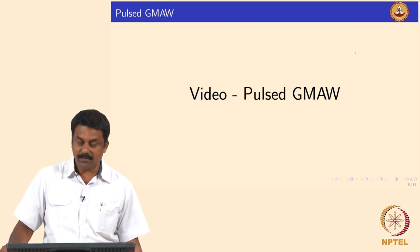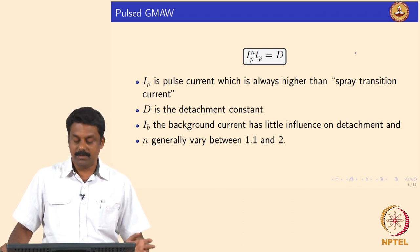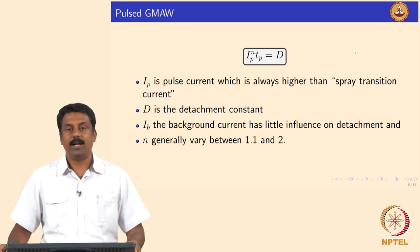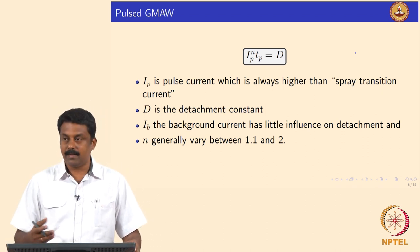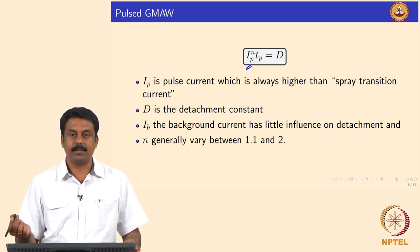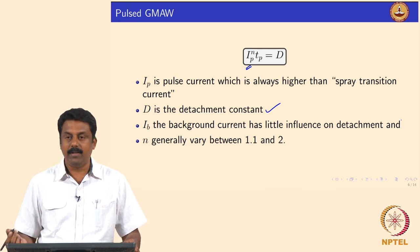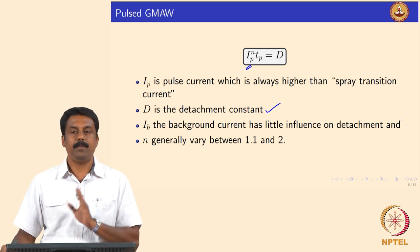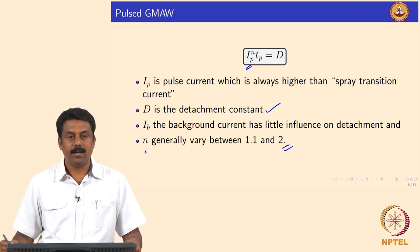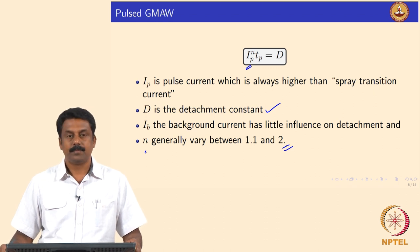Generally for a given material, IP^N × TP is a constant — a function of material composition and diameter. The exponent N varies from 1.1 to 2, and for most materials it can be treated as a constant. D is the detachment constant, a function of material composition and diameter. IP is always higher than the spray transition current, and IB has very little influence on detachment since detachment has already happened before the onset of IB.